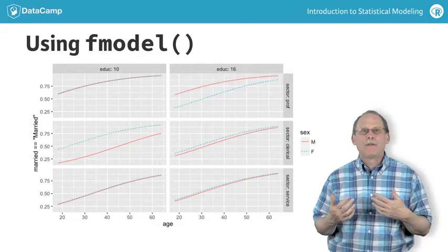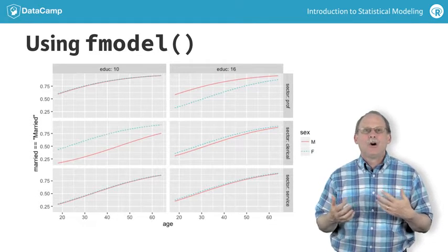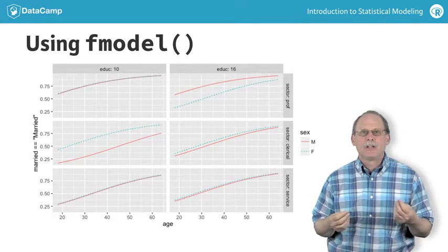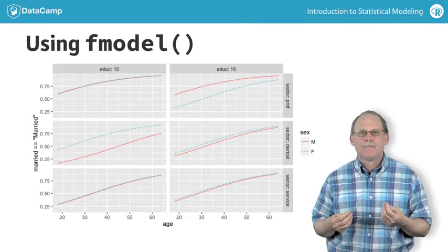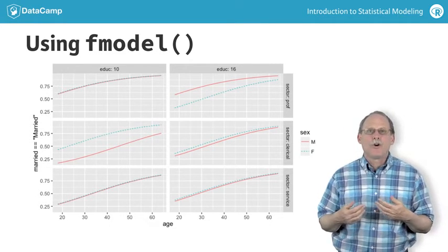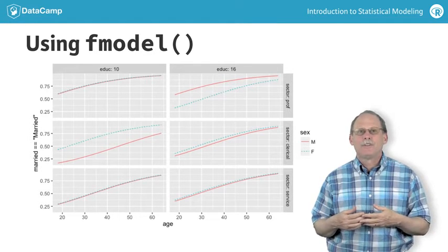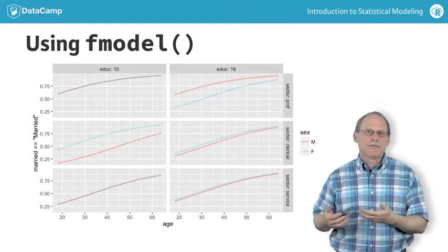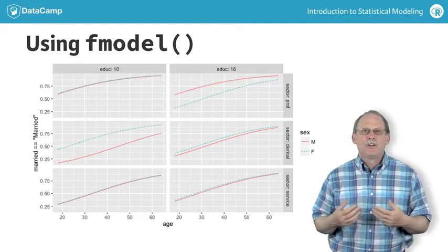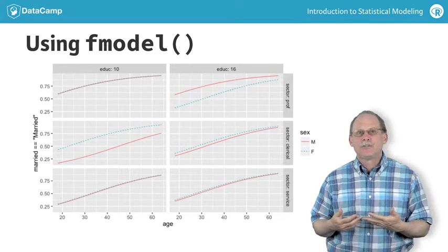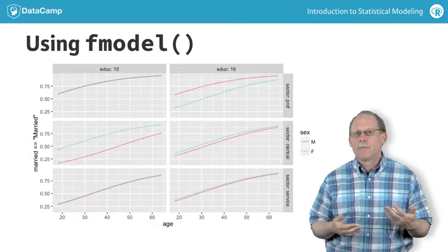You can judge for yourself whether this is overwhelming. You don't want to make the graphics so busy that it becomes difficult to interpret. The graphs show that older workers are more likely to be married. That's the general upward slope in the curves of probability of being married versus age.